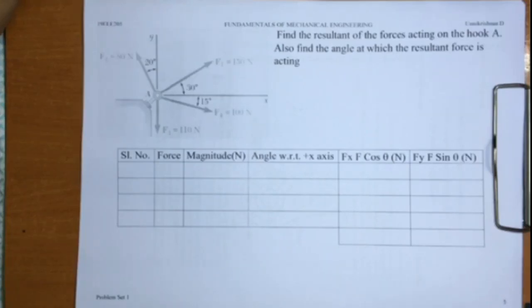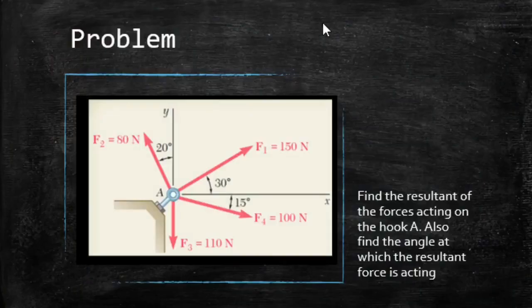The important thing that you have to remember here to do this problem is that you need to have consistency in deciding the angles. If you decide on a reference axis and measure all the angles from that reference axis, then chances are less that you can make a mistake.